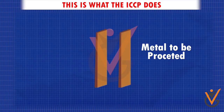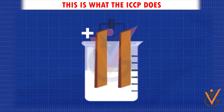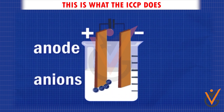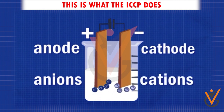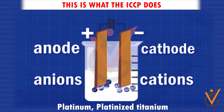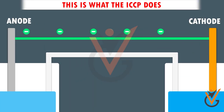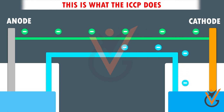In the ICCP, the metal to be protected is connected to an insoluble anode, and the current is passed using a DC source opposite to the corrosion current, so that the corroding metal gets converted from anode to cathode and is protected from corrosion. This insoluble anode can be either platinum, platinized titanium, or any other inert elements. This DC current has to be equal to or slightly greater than the natural corrosion current so that the anode is now protected and does not corrode.